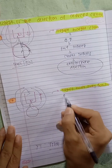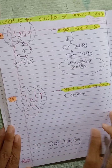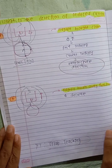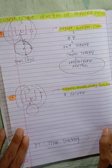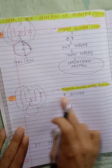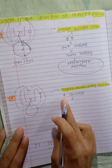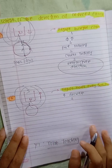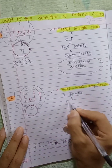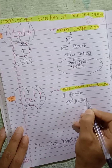The magnetic flux is decreased. What is the induced EMF? By Lenz's Law, since the magnetic flux is decreasing, an EMF is induced.